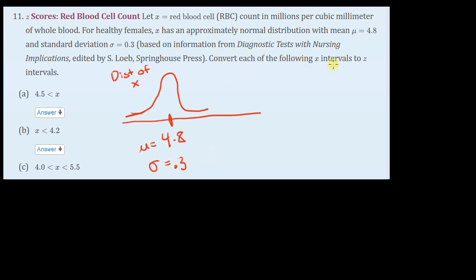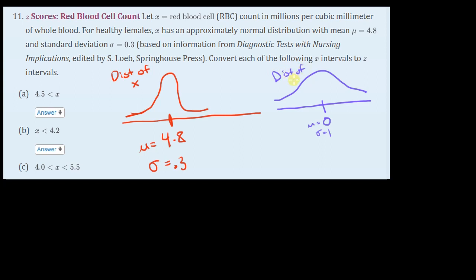The first thing we want to do is convert each of the X intervals to Z intervals. Z is our standard normal distribution — it looks like a bell curve centered on 0, and it has a standard deviation of 1. So mu is 0, sigma is 1 for the distribution of Z. The way we go from a distribution of X to a distribution of Z is we use this formula: Z equals X minus mu divided by sigma.